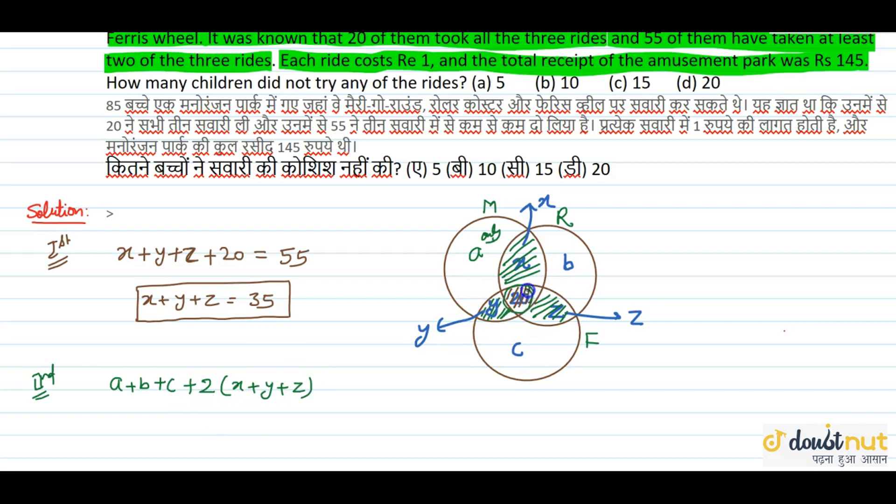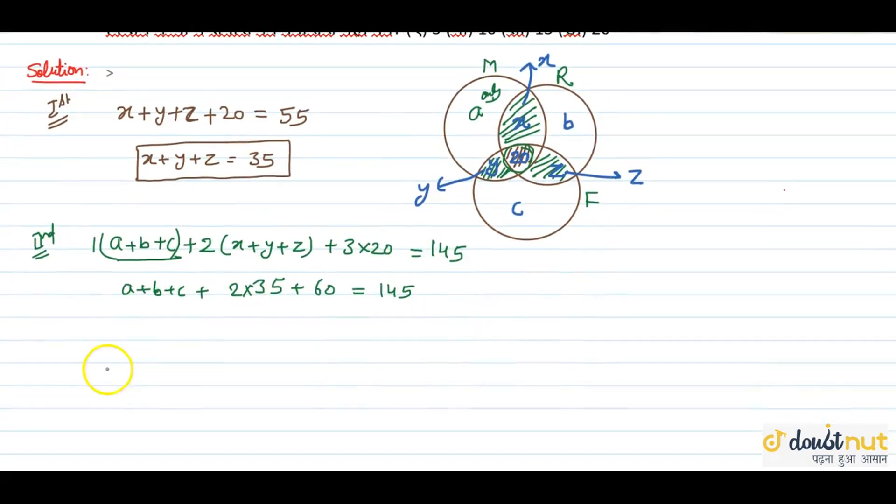Now, those 20 students, they did M riding, R riding, F riding. So for 20 we will take 3. So the total calculation: a plus b plus c plus 2(x plus y plus z) plus 3 times 20 equals 145. So a plus b plus c plus 2 times 35 plus 60 equals 145.